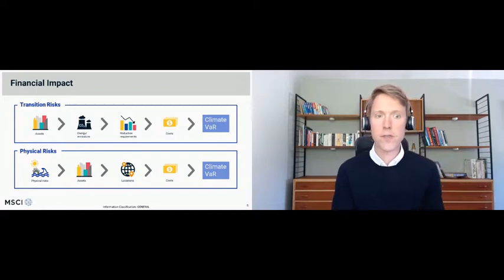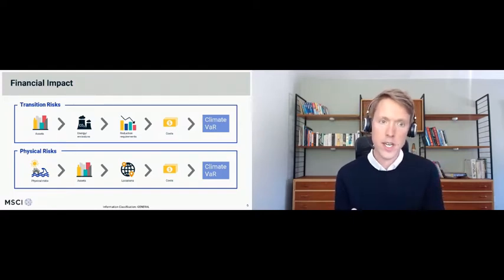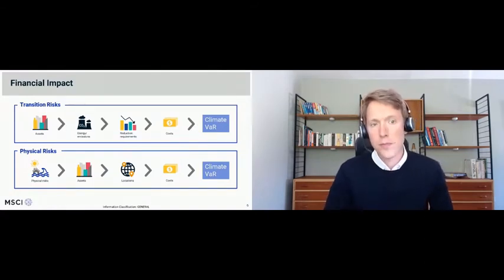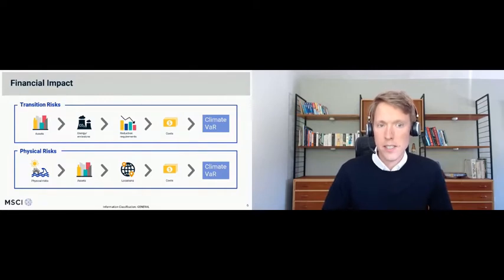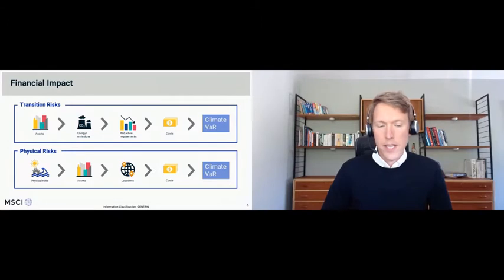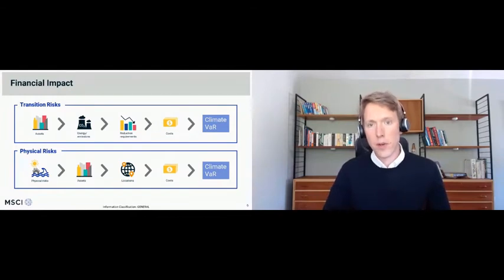We do exactly the same for physical risks. We look at what physical risks we think are going to change over time, where they'll hit geographically, the intensity of those risks — how much sea level is going to rise, how much more we expect in terms of tropical cyclones. We then overlay a portfolio's assets using geolocation, and using various modeling techniques, estimate the damage caused by these physical events. Those are then discounted back to today's value and compared with the current asset value, estimating the potential impact on the portfolio's value today as a result of climate changes in the future.